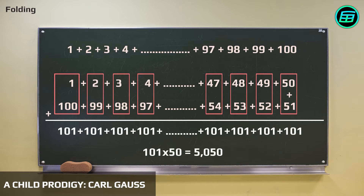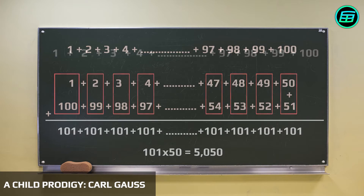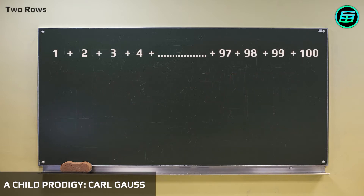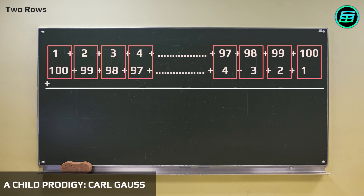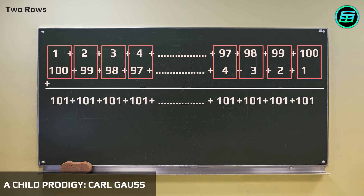Other researchers think that Gauss wrote another series under the first in reverse order, and added the numbers vertically as before, giving the result 101. Since there are 100 sums, this makes 100 times 101. But because there are two series, Gauss divided the sum by 2 and found the result. Again, 5050.